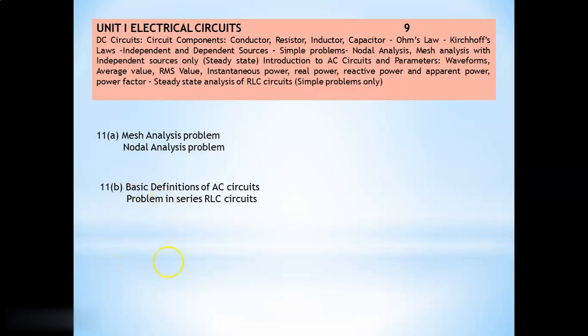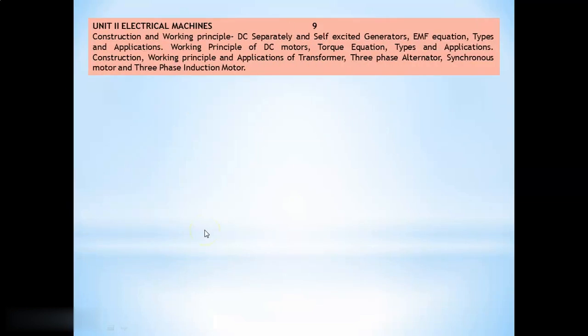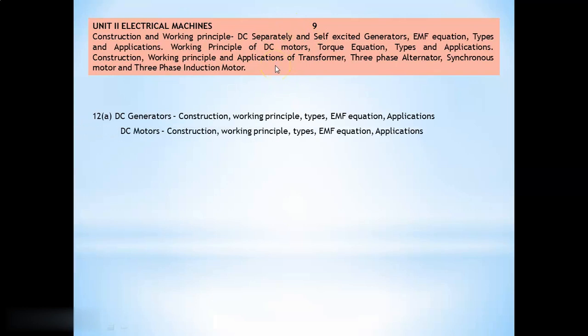If you take second unit, electrical machines, it can be divided into two categories. One is DC machine, another one is AC machine. If you take DC machines in 12A, DC generator and DC motors may be asked. Here for DC generator, construction, working principle types, EMF equation and applications are important.